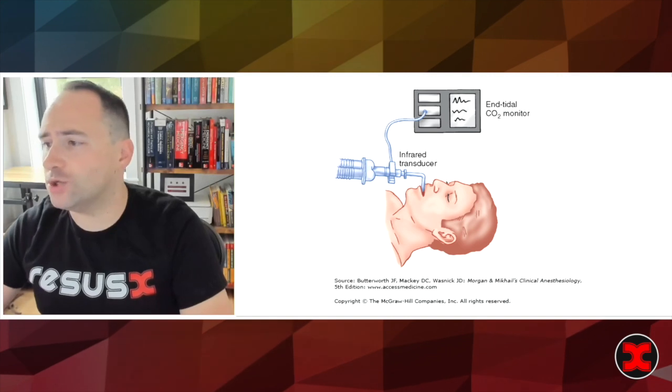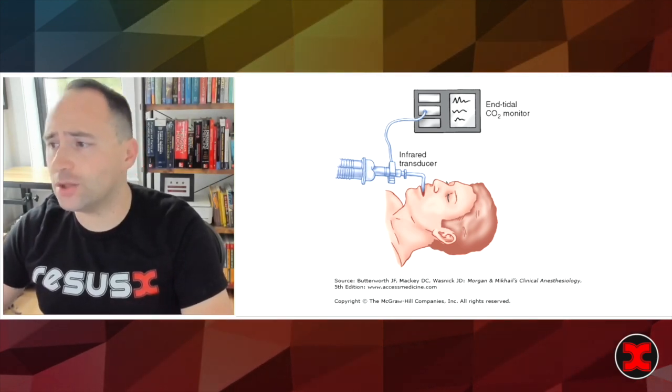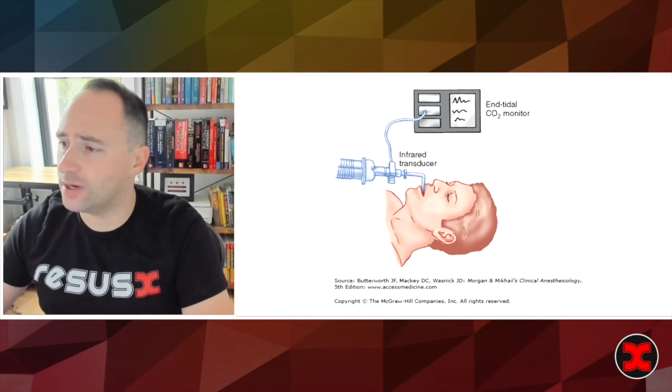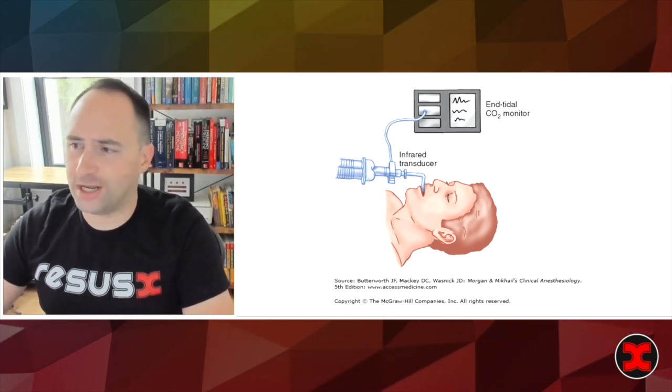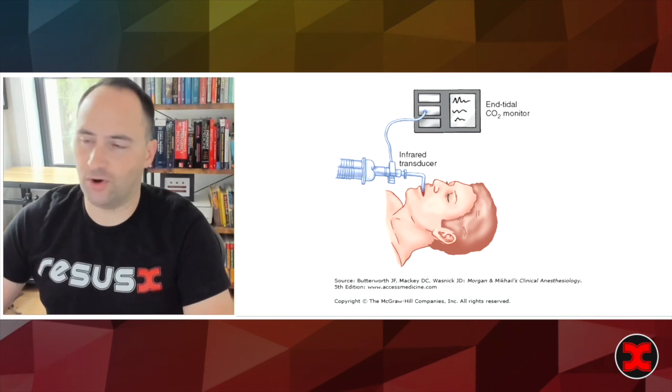Mainstream modules are connected very close to the endotracheal tube and it has an infrared transducer approximating the ET tube. There's a very small increase in dead space which is virtually forgettable.